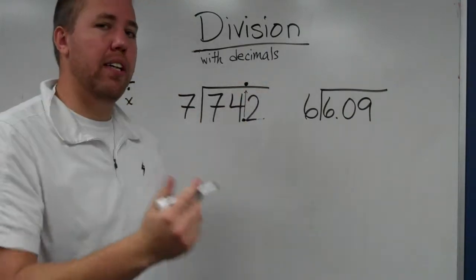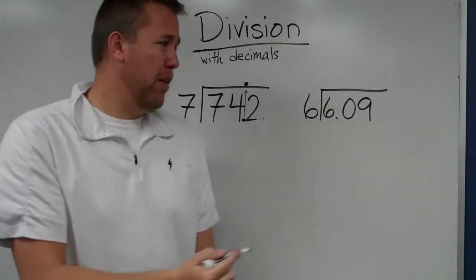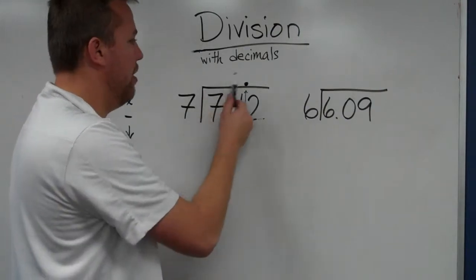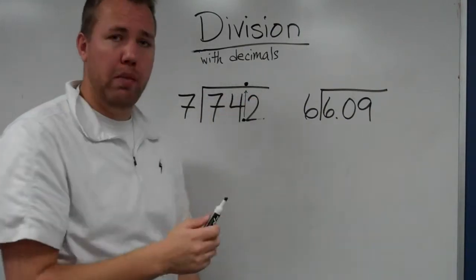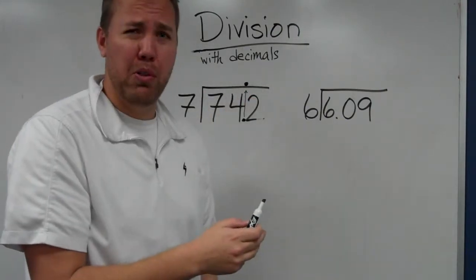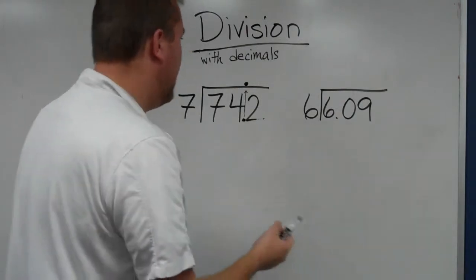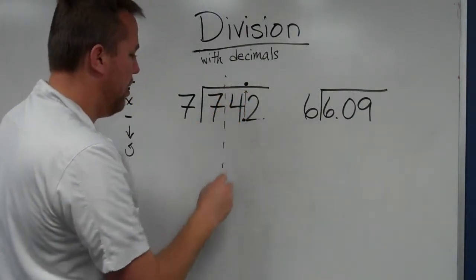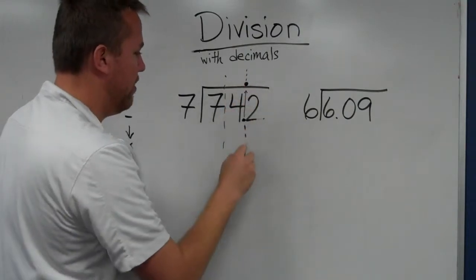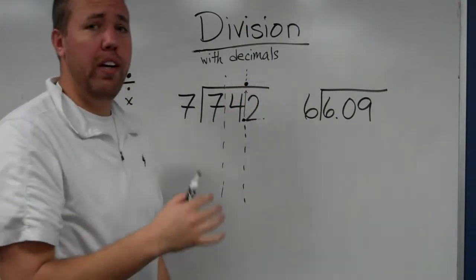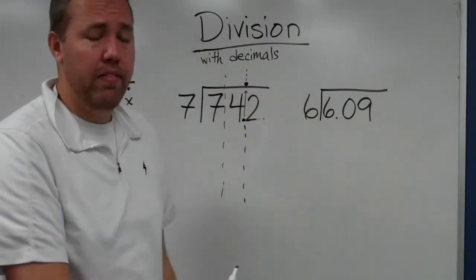This is why place value becomes important because if we're not lining up our quotient where it should be, the decimal point's really going to mess us up. But if we get used to just keeping our place values in the same spot, then we are going to be just fine.